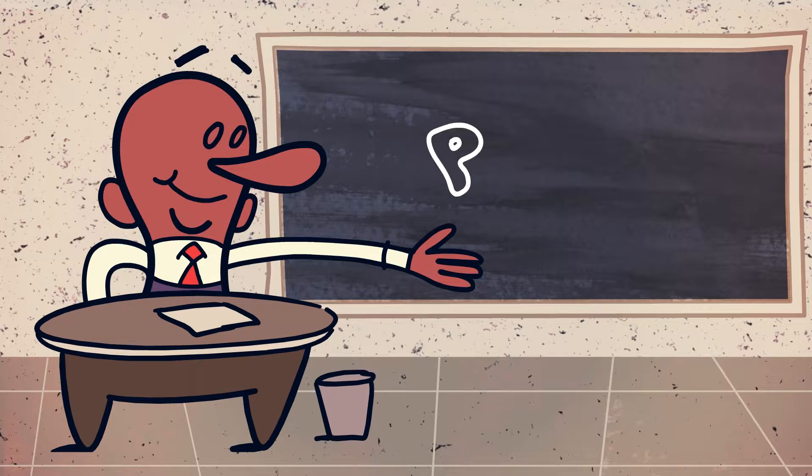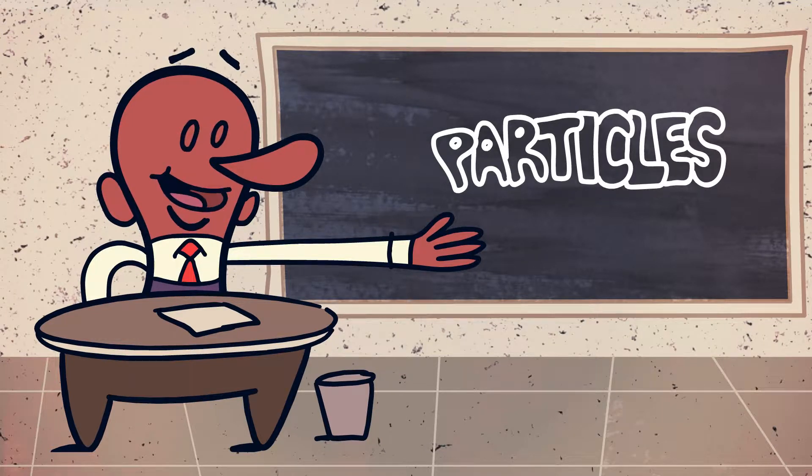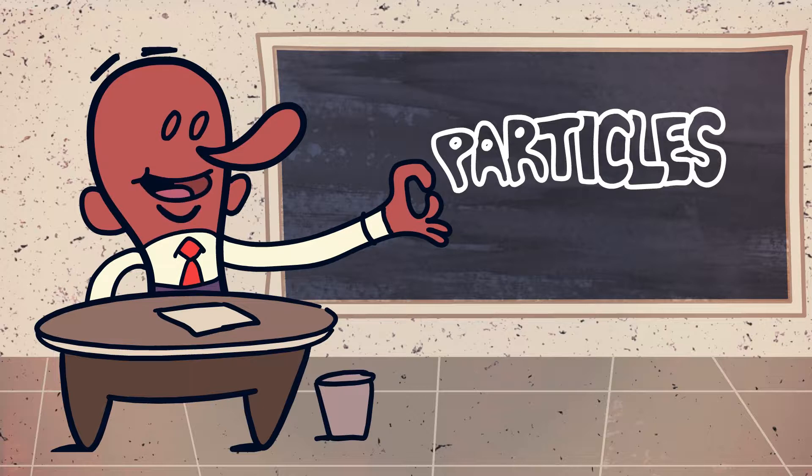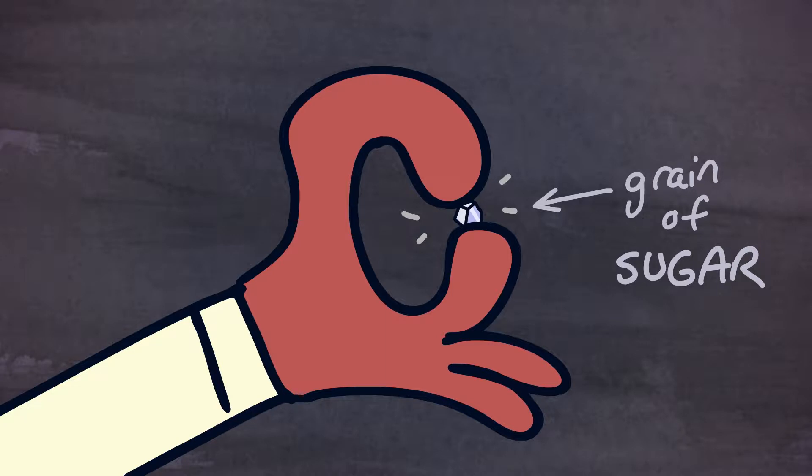Today, we're going to talk about the particles that make up solids, liquids and gases. Particles are so tiny, we can't see them with our eyes. In fact, one grain of sugar is made up of millions of particles.